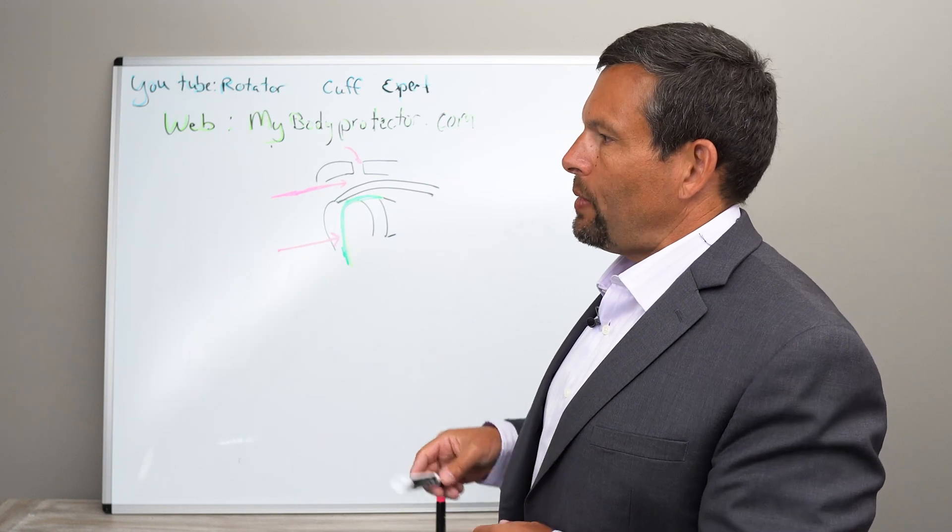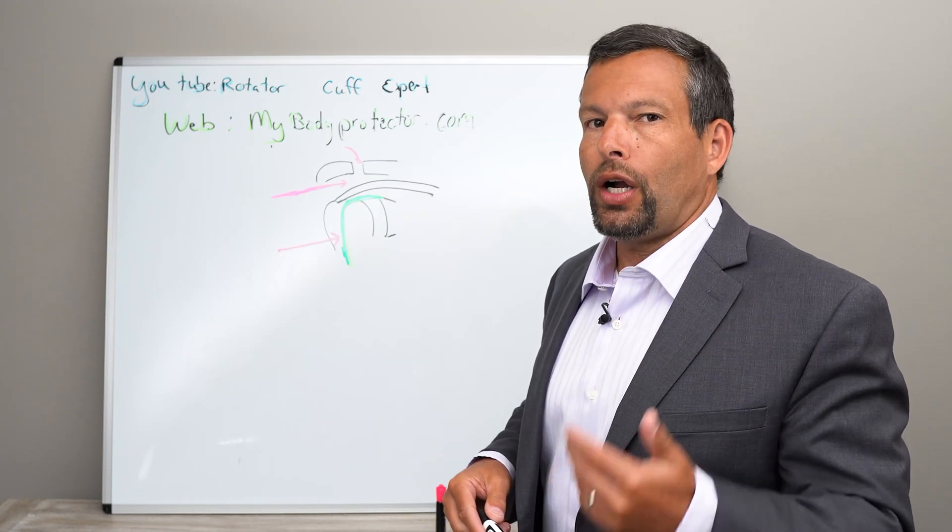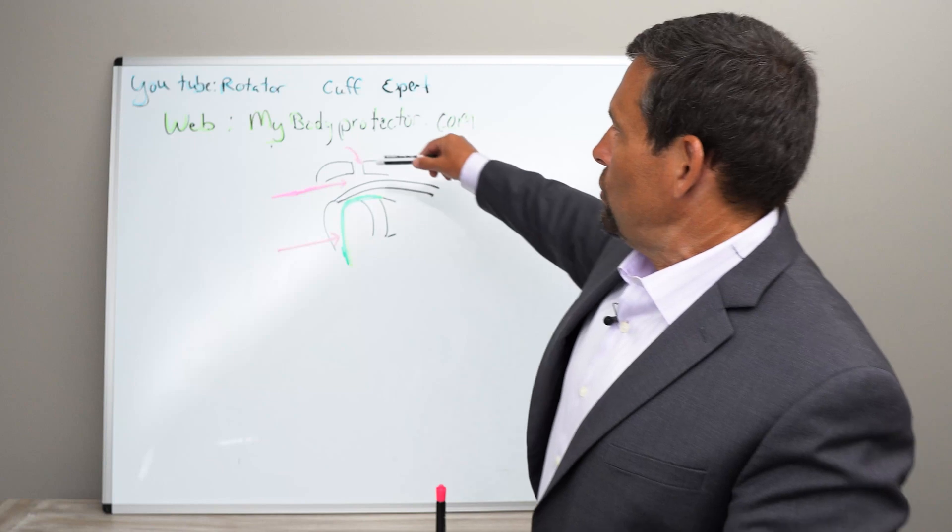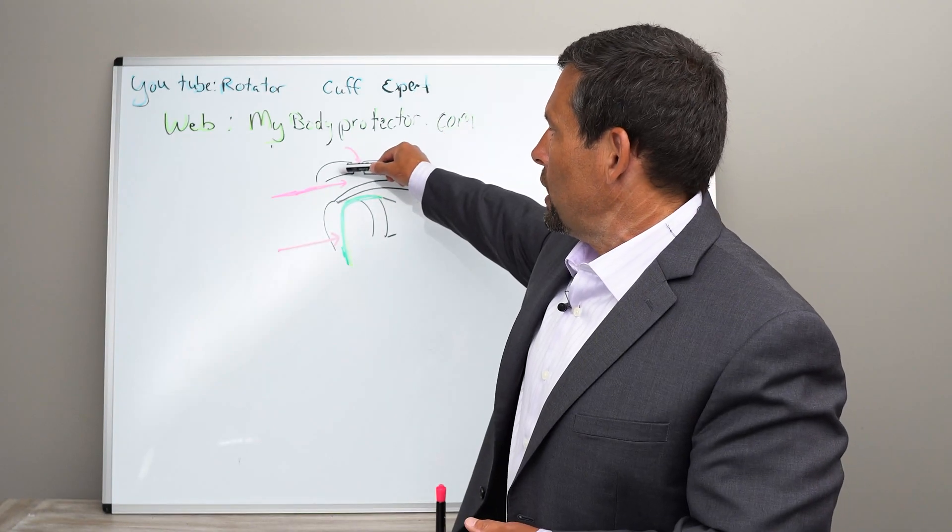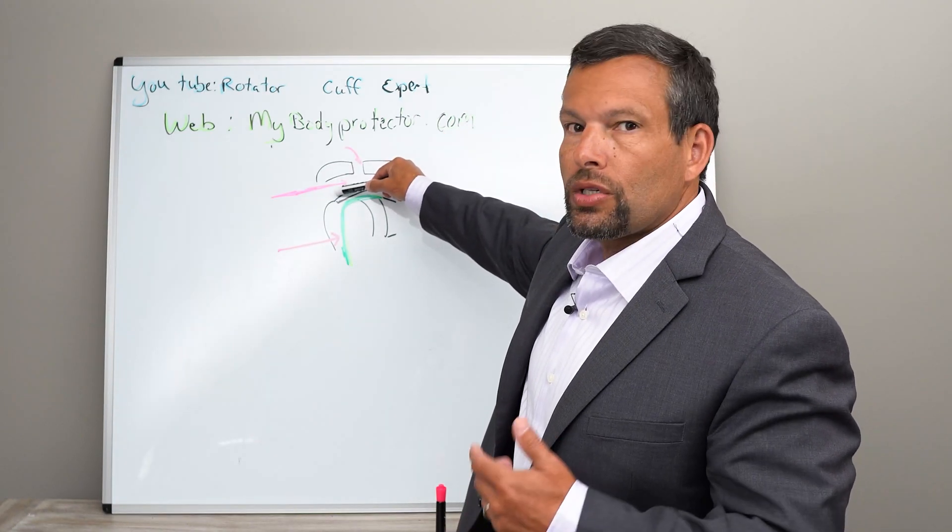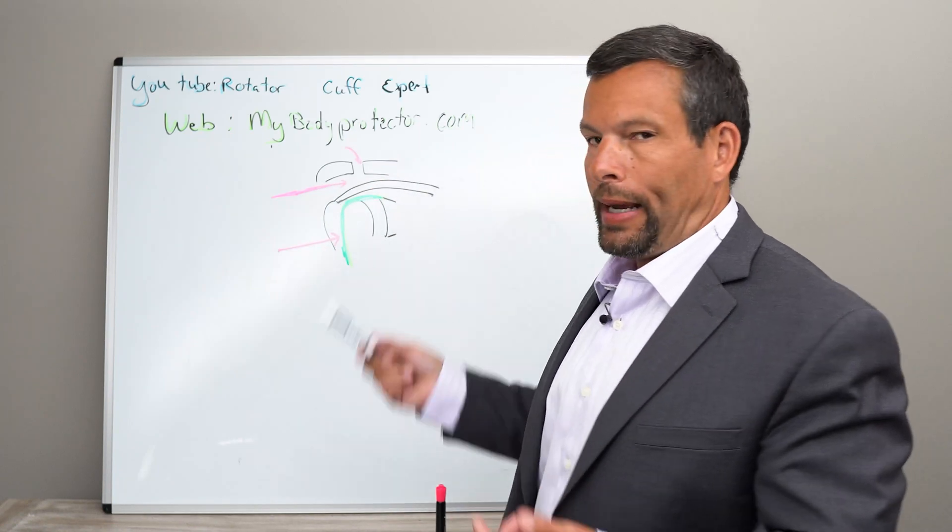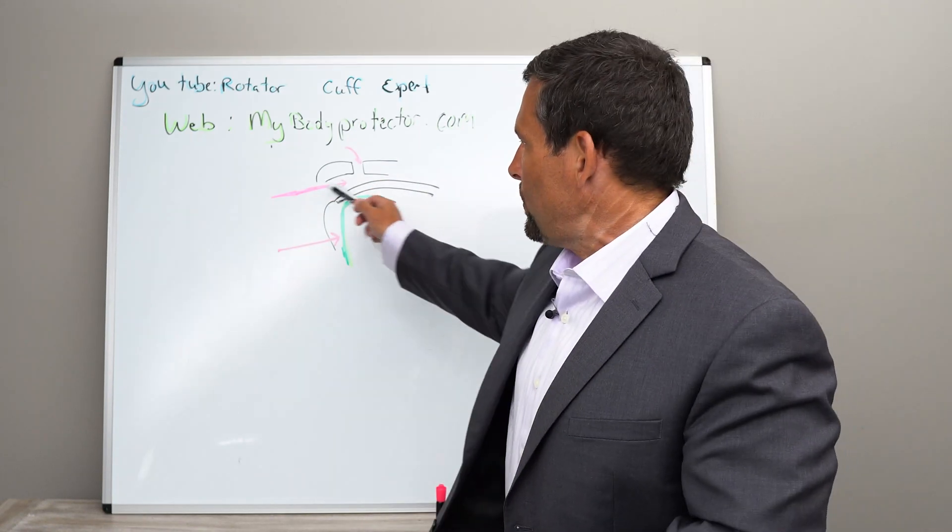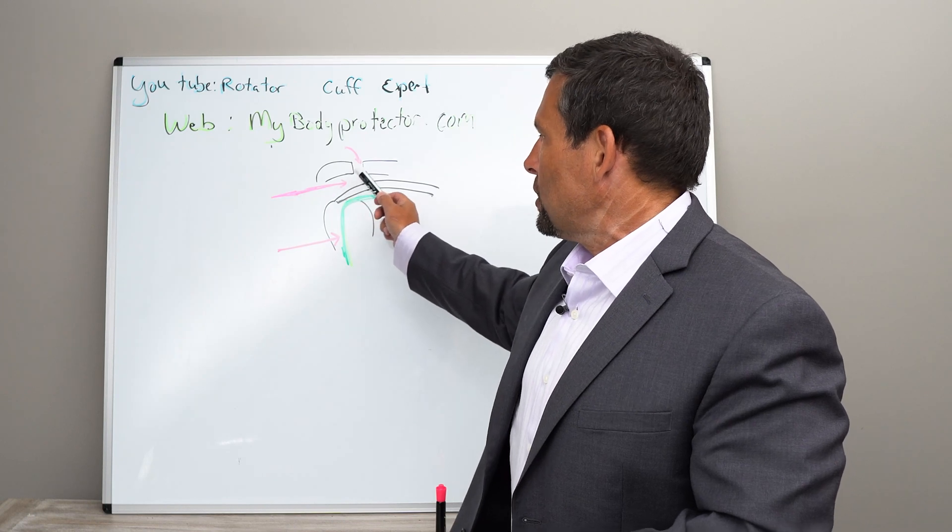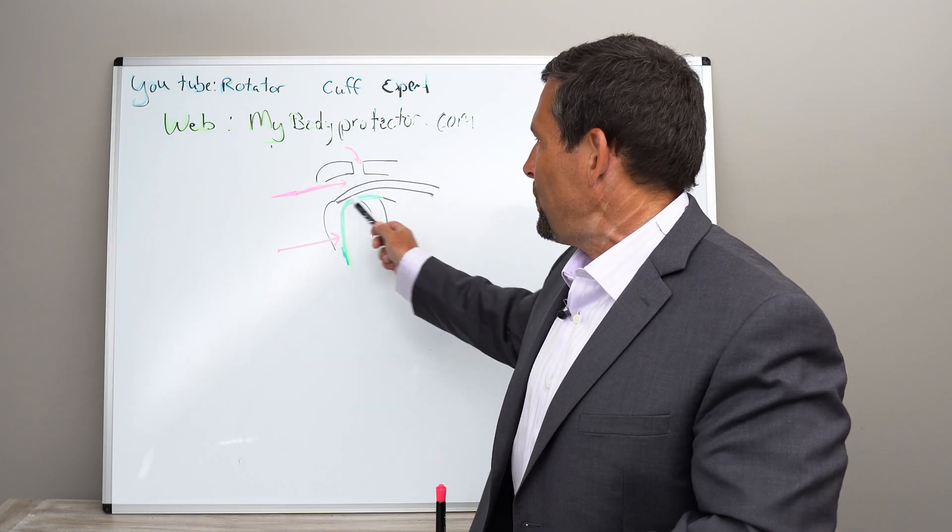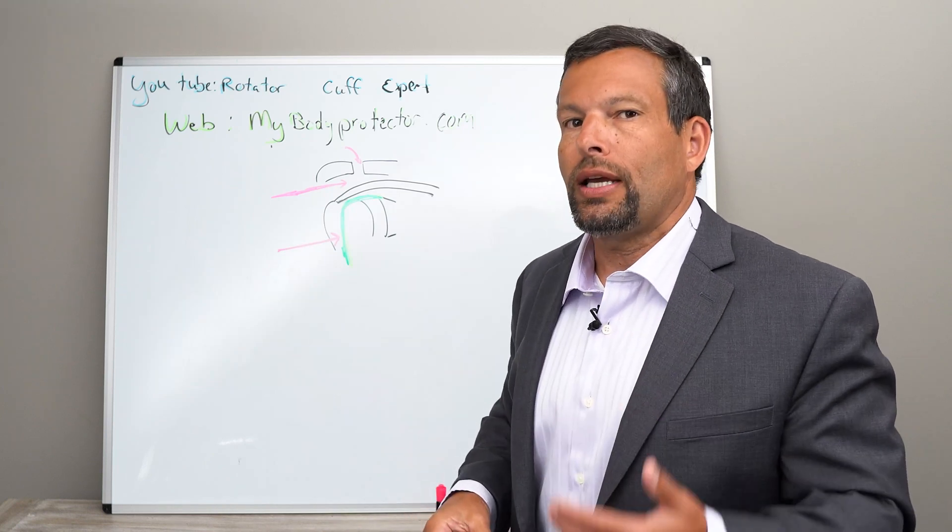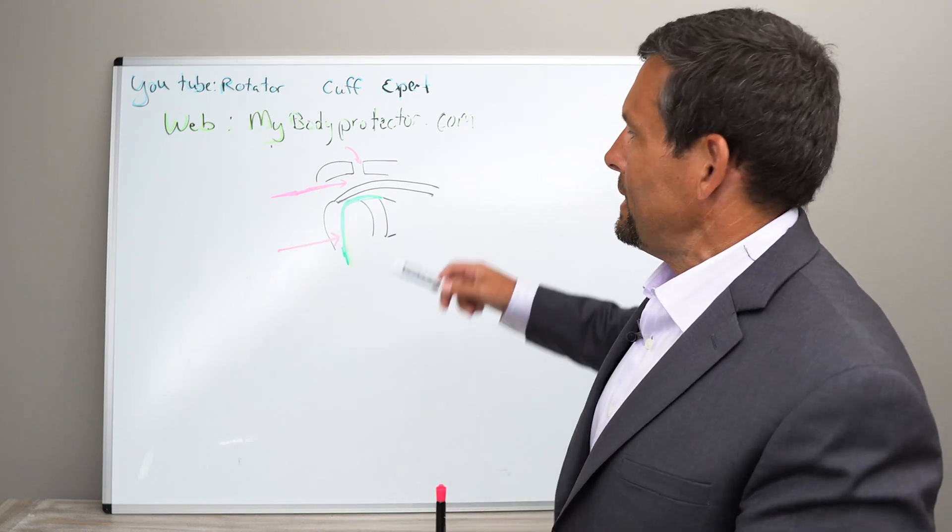So the number one most common place is what we call a subacromial injection. What does that mean? So this is the acromion. We're going to go underneath it, which is subacromial, and that's right on top of the rotator cuff. So if you have a problem with the rotator cuff, we're going to do this subacromial injection, get this anti-inflammatory fluid on top of the rotator cuff to decrease that rotator cuff tendonitis. That's the idea.